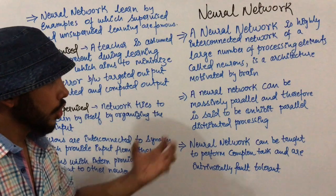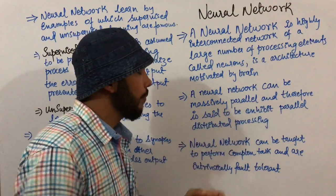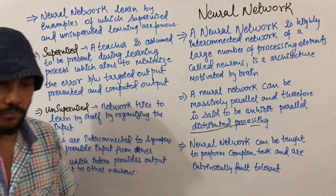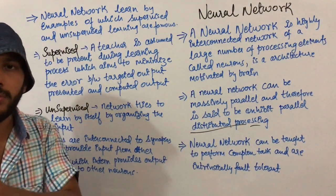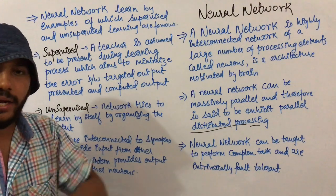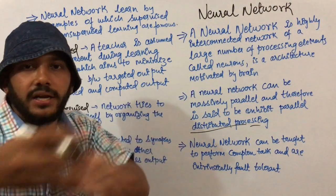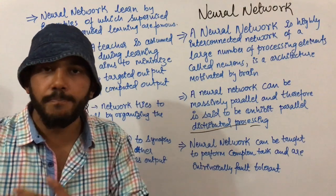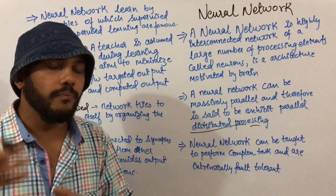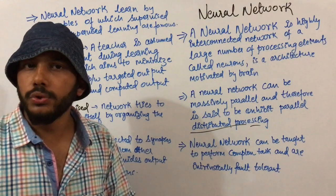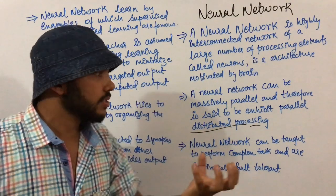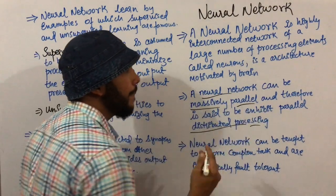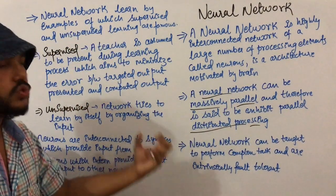In parallel distributed processing, different neurons are present at different locations and pass information simultaneously. When information is processed in a parallel distributed network, computing is very fast. Therefore, neural networks perform massively parallel computing and are very fast.